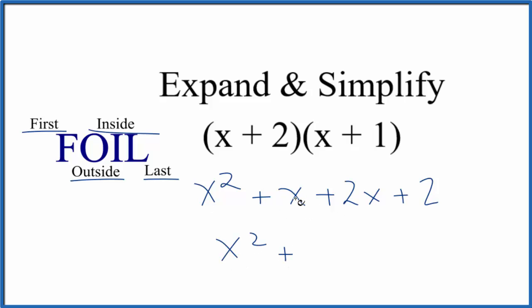But for x, we could add x and 2x. That would give us 3x. And then for 2, we just have that 2 there.